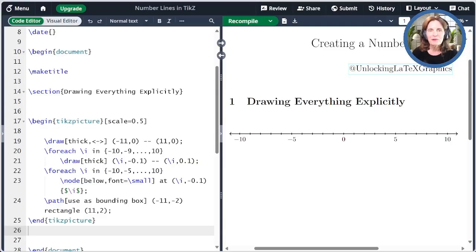That was just one way to draw a number line. Another way is to simply use the grid command. Let me paste some code here, and I'll show you how to do that.